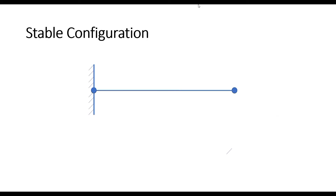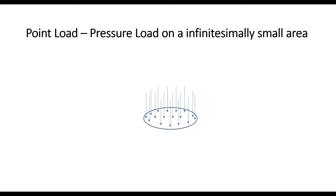Let us see what we mean by a point load or a concentrated load. Let us consider the table configuration — the cantilever beam — that we had been discussing in the last two sessions. Let us consider a load acting on a single point at the tip of this cantilever beam. It is important to understand that a point load is an idealized assumption, as there is nothing like a perfect point load.